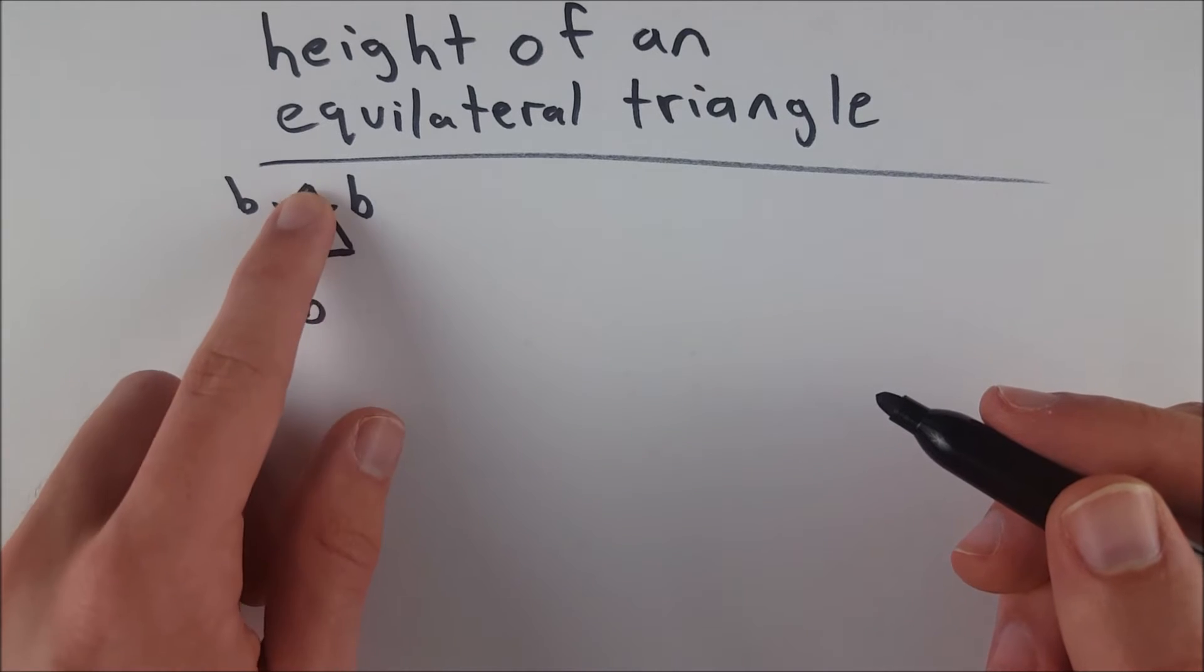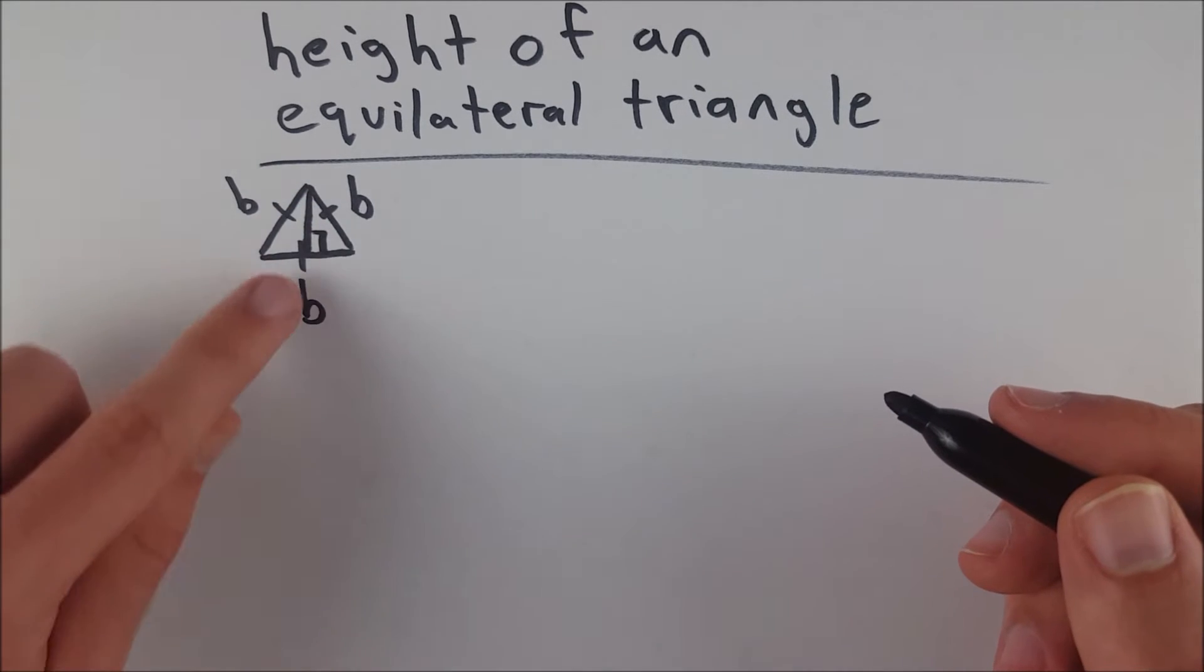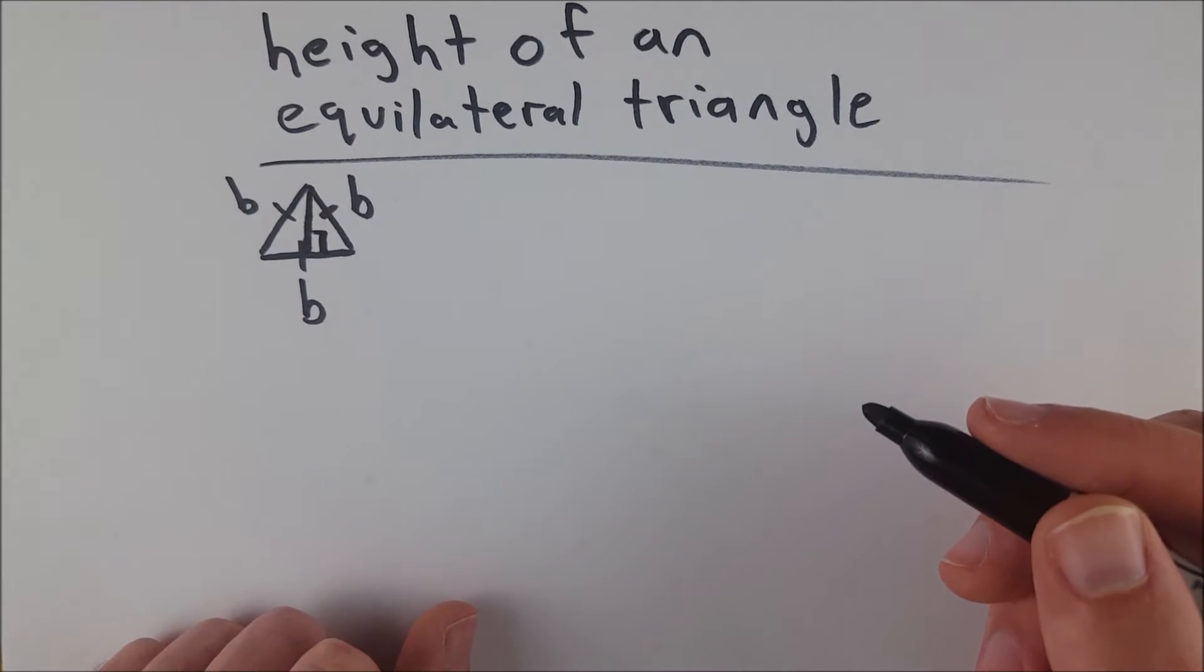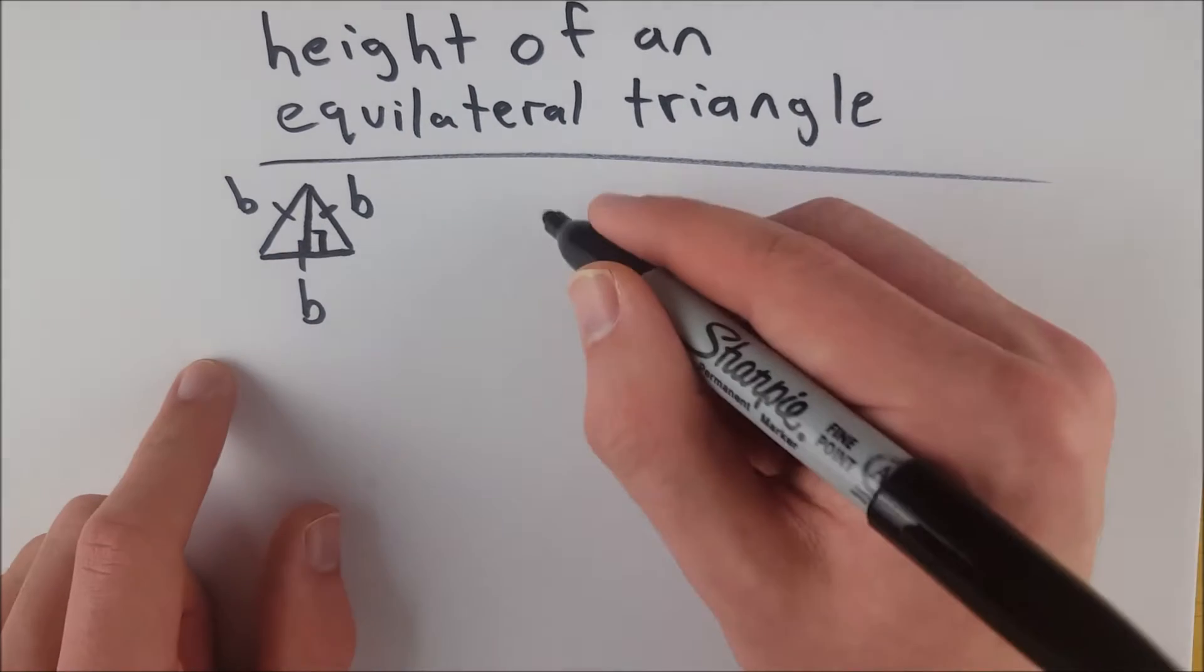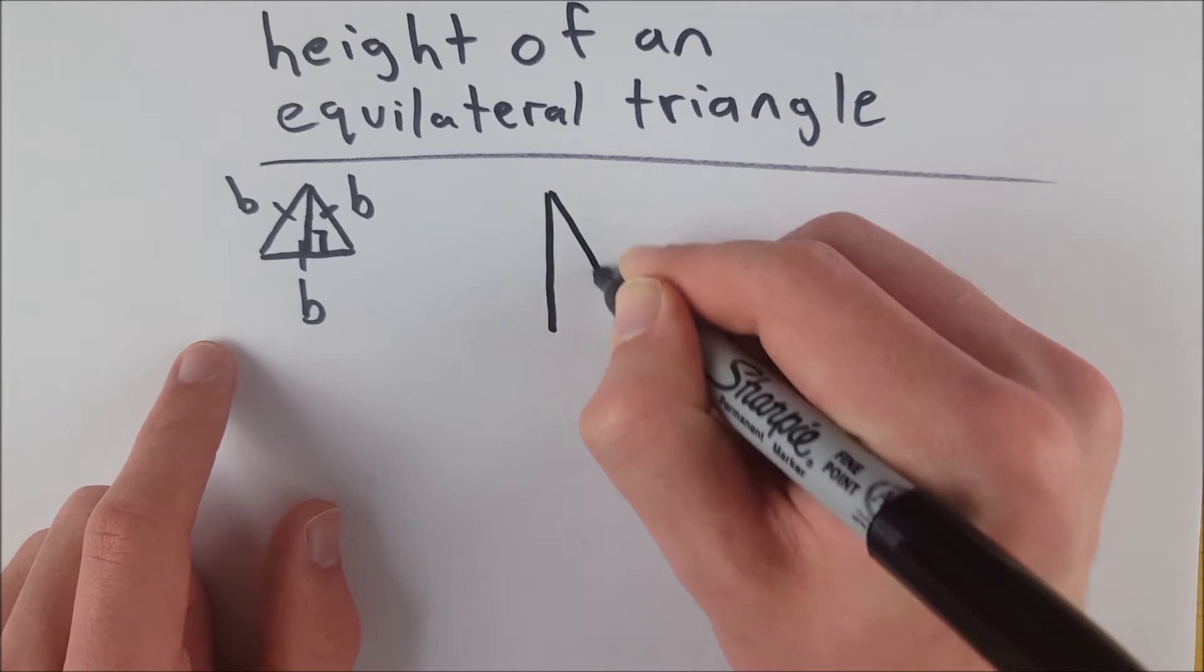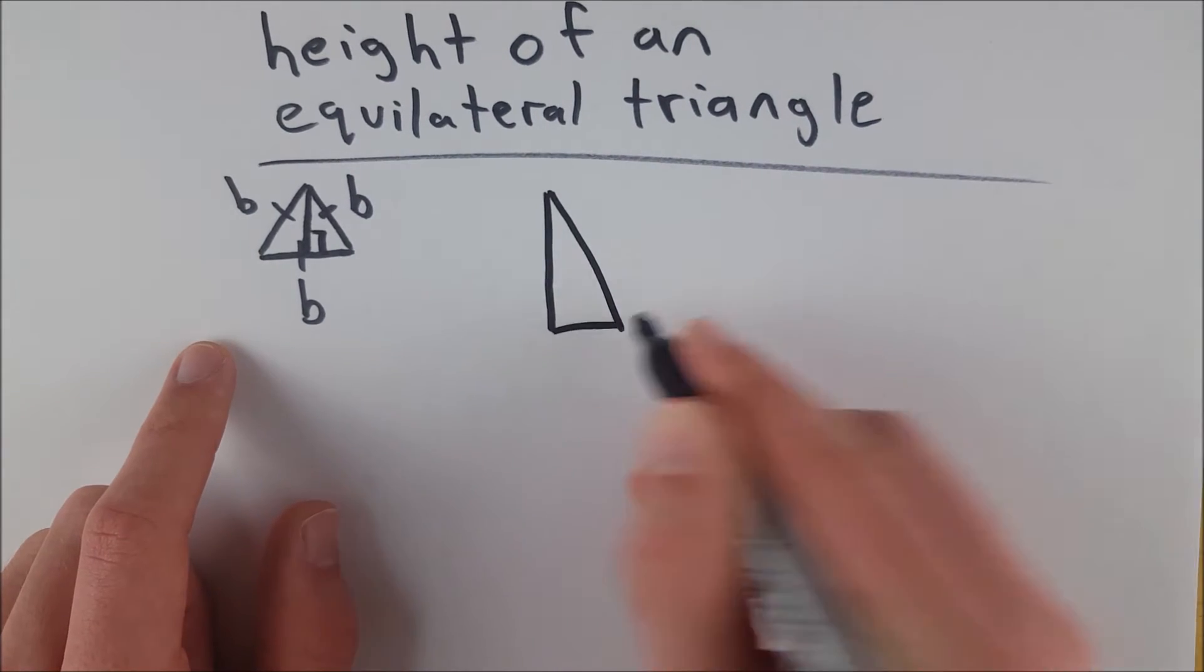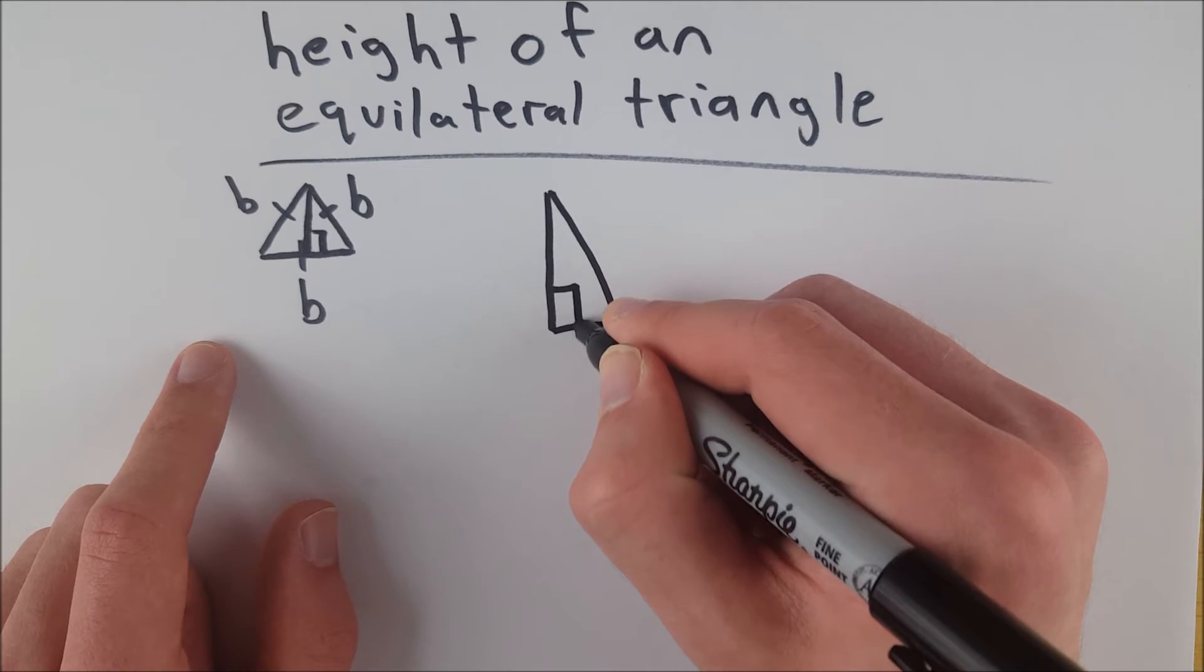And the congruent right triangles have a leg, which is the height of the equilateral triangle, which is what we're trying to figure out. So we could take either one of these right triangles, doesn't really matter which, I'm going to draw one of them over here, just so we have a bigger picture to work with.